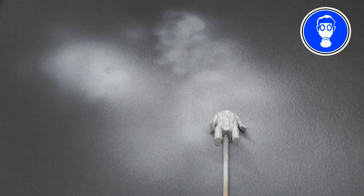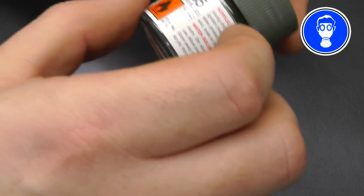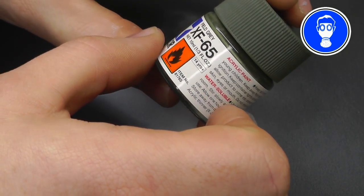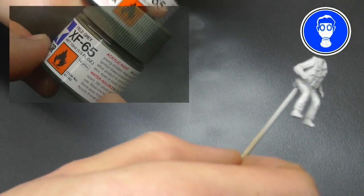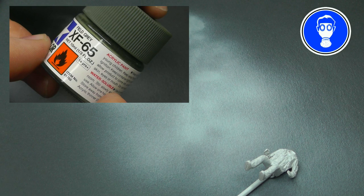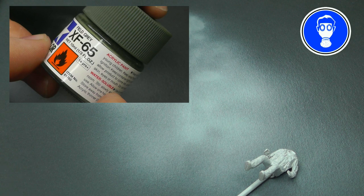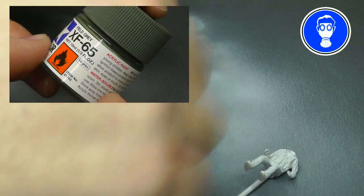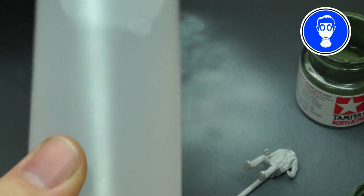We're going to now start off by spraying on our first base colors. Now spraying's nice, quick and easy rather than brushing. And what we're going to do, we're going to be using XF65 Field Grey by Tamiya just to spray our main body up because that's going to be our main color. So make sure you give it a good shake and then try and get the lid off.